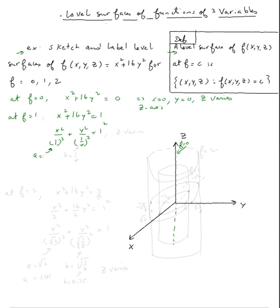So my a happens to be one, my b happens to be one-fourth. So I'm going to go here, this is one, I'm going to go negative one, and I'm going to go one-fourth, smaller than that, one-fourth, negative one-fourth.